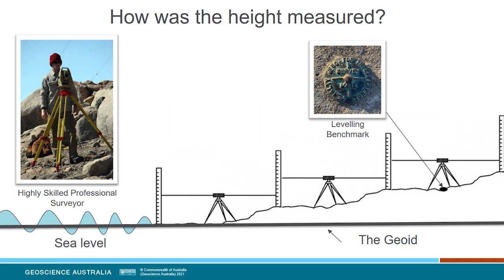These heights are ultimately referenced to a physical place with a known height — here depicted as sea level, which is commonly taken to be zero. Today, levelling still remains the most accurate way to transfer physically meaningful heights, but it's a lot of work to transfer heights over long distances. To cut down on some of this work, physical benchmarks are often placed on the ground with a recorded height on them, so that surveyors don't always have to start at zero.